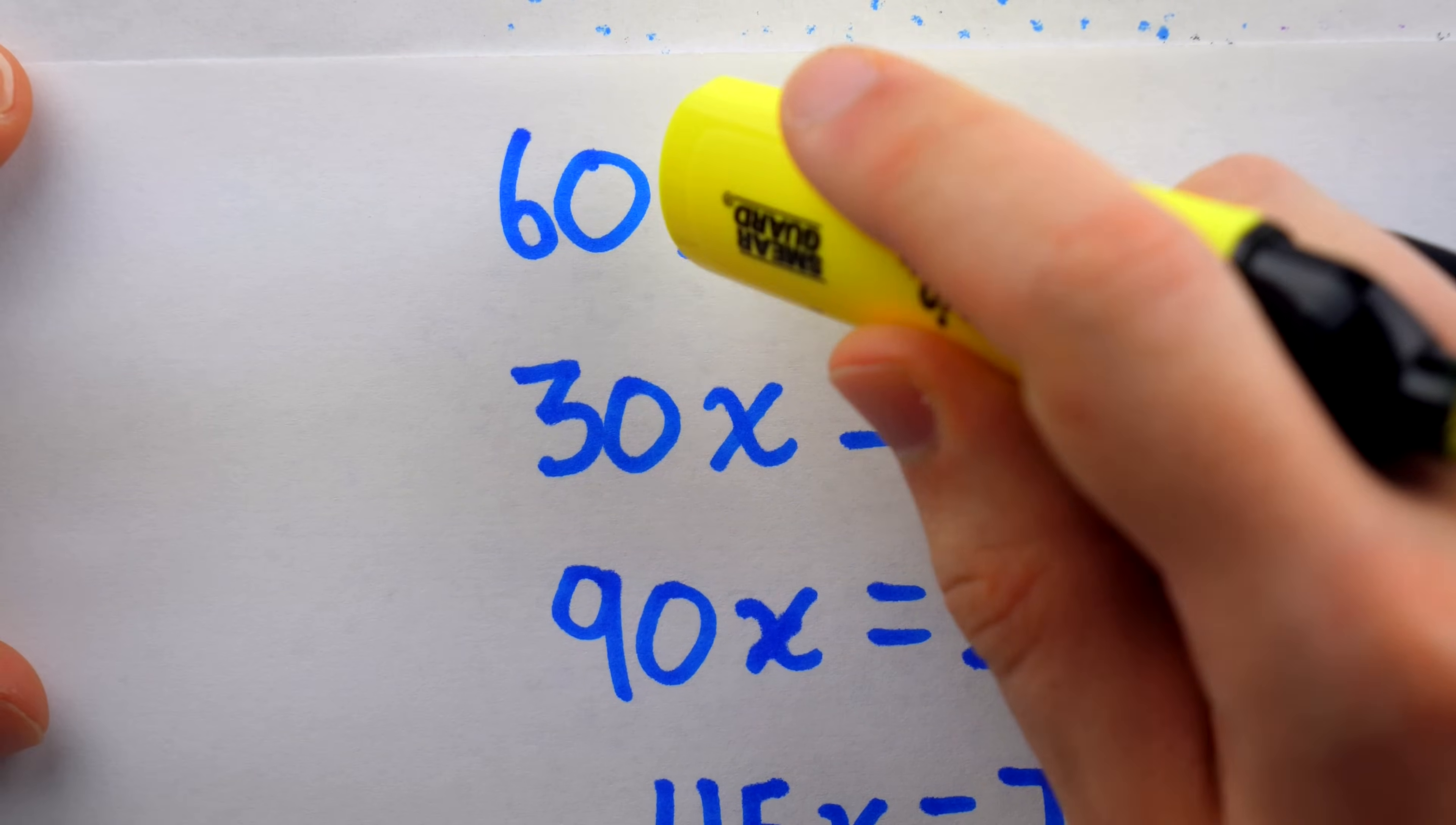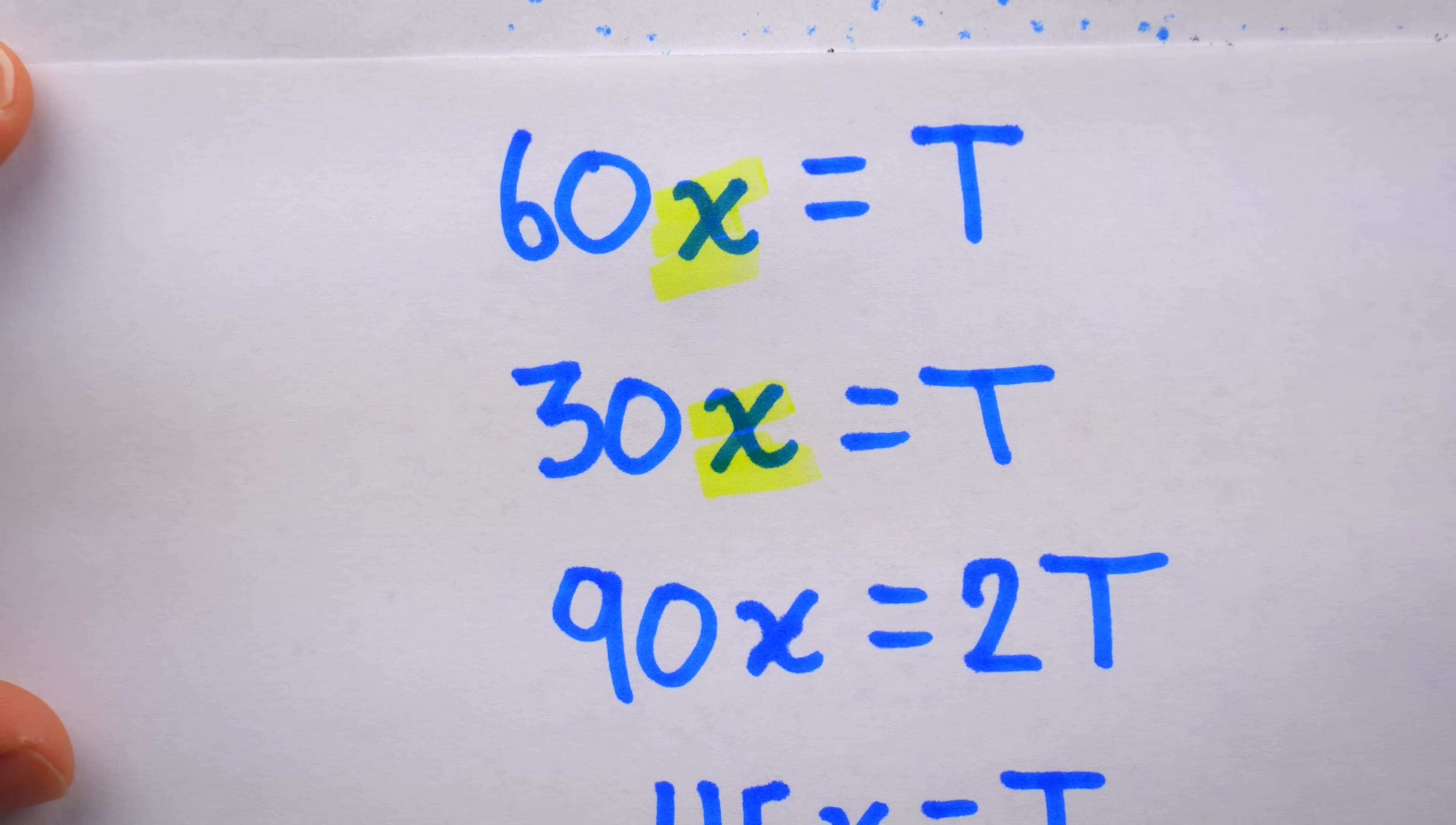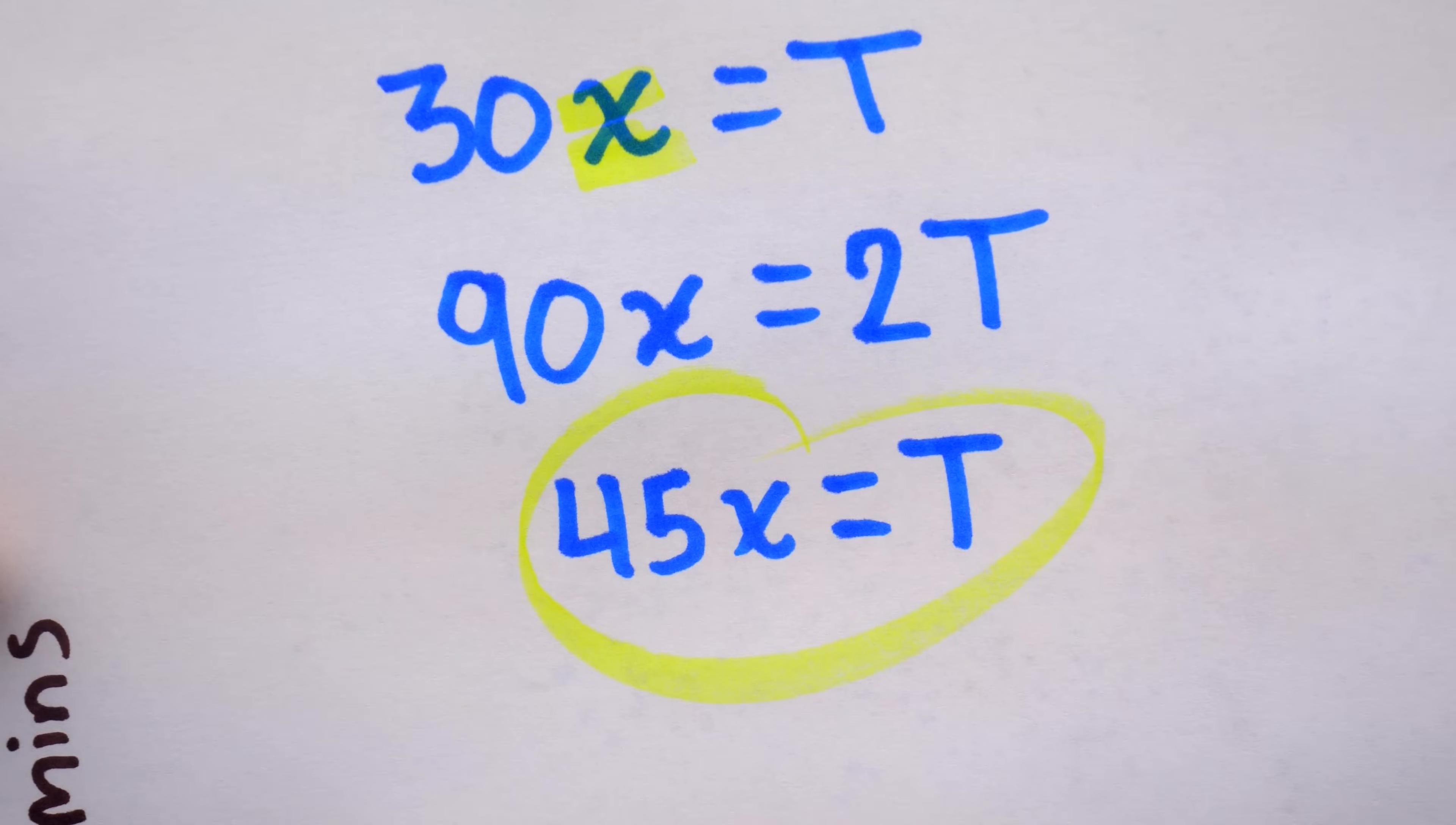The error here, of course, is that x is representing the flow rate, but we would need different variables because the flow rate of the hot faucet is different from the flow rate for the cold faucet. The cold faucet runs faster. So using one variable here is not correct, thus we get a wrong answer.